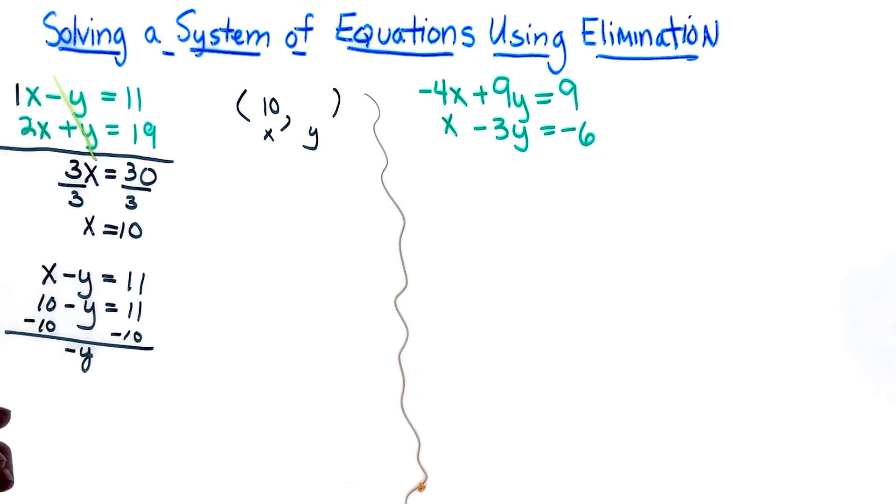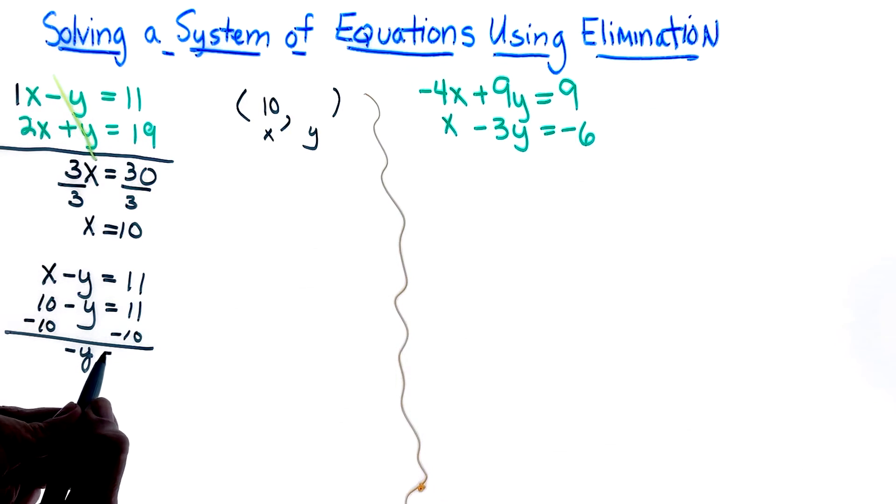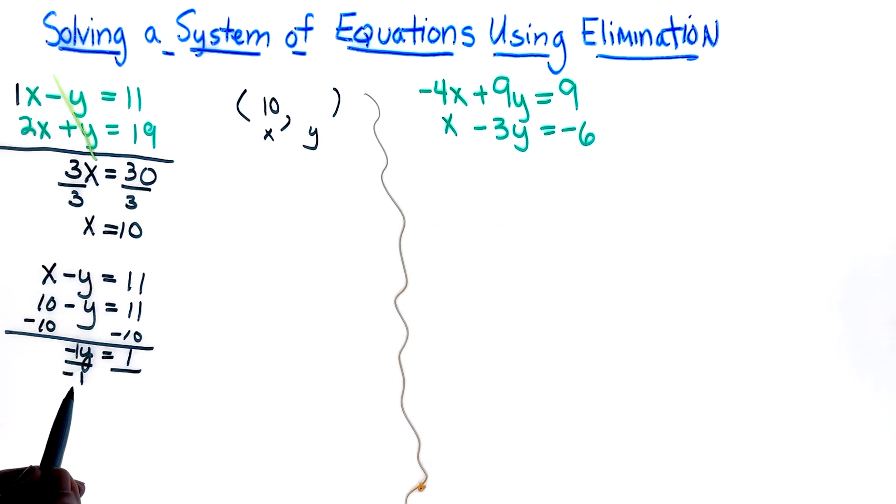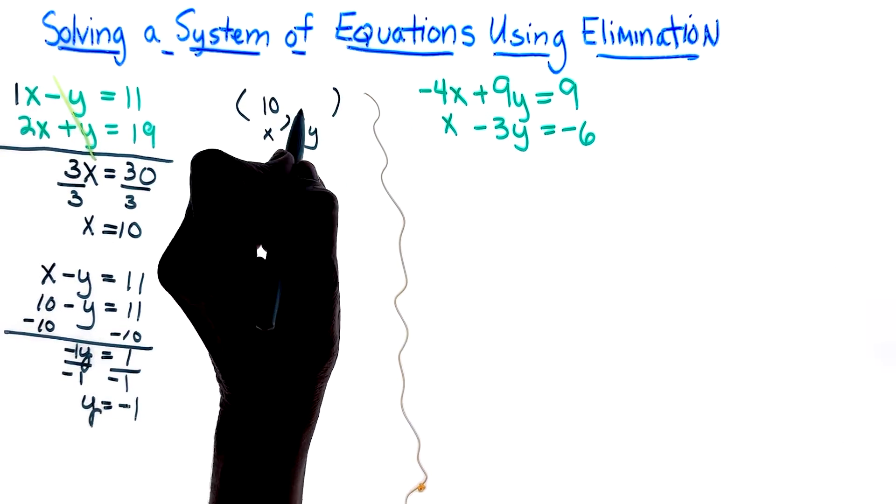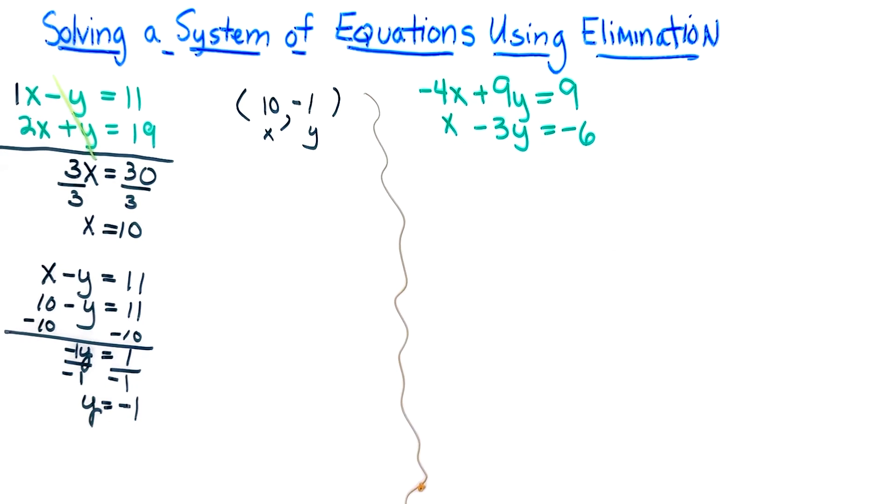And I end up with, yes you have to bring that subtraction sign down, negative y equals 1. Well, remember we cannot have a negative variable, so when we have a negative variable we're going to divide both sides by negative 1, so y is equal to negative 1.